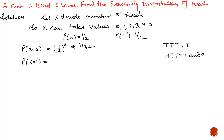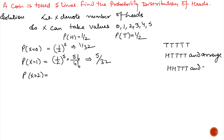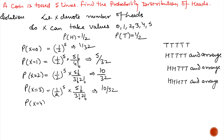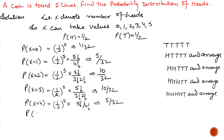For 1 head, we have 1 head and 4 tails, and we also need to arrange them. So the probability is 1 by 2 raised to the power 5 multiplied by 5 factorial divided by 4 factorial. Similarly, the probability of 2 heads is 1 by 2 raised to the power 5 multiplied by 5 factorial divided by 3 factorial and 2 factorial, because head appears 2 times and tail appears 3 times. The probability of 3 heads is 1 by 2 raised to the power 5 multiplied by 5 factorial divided by 3 factorial and 2 factorial, because head appears 3 times and tail appears 2 times.